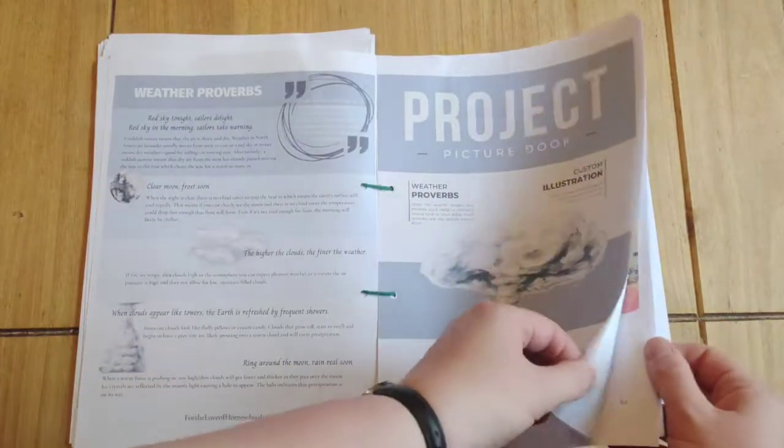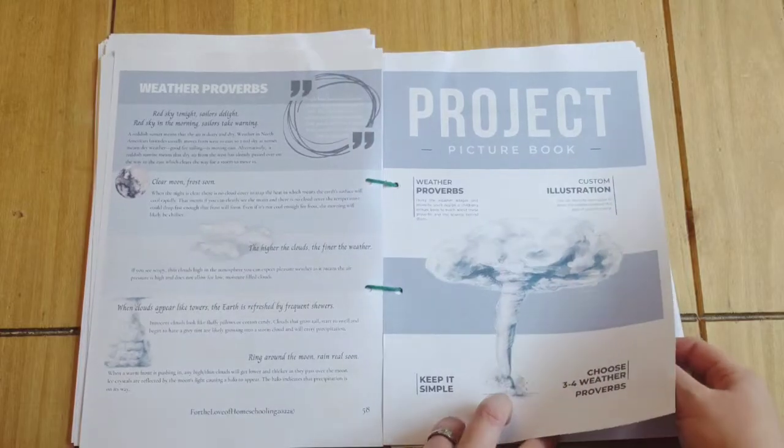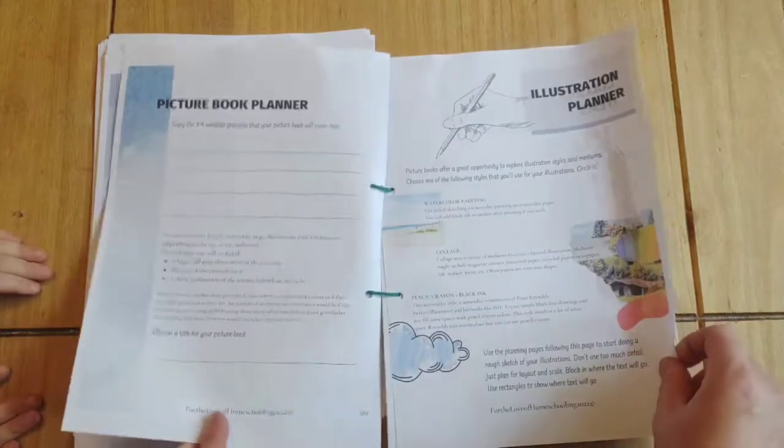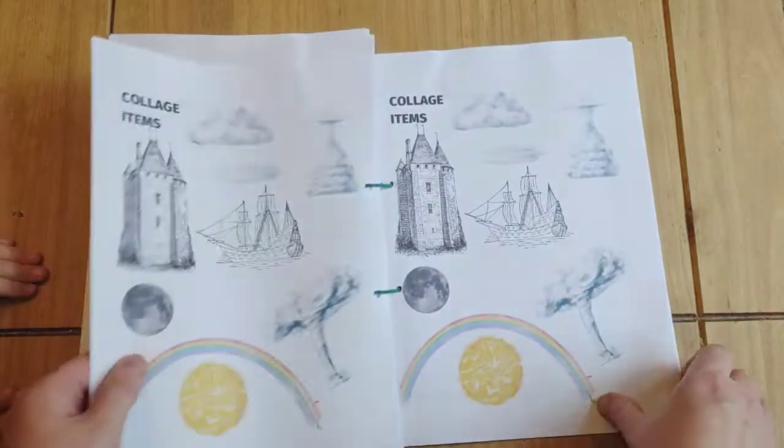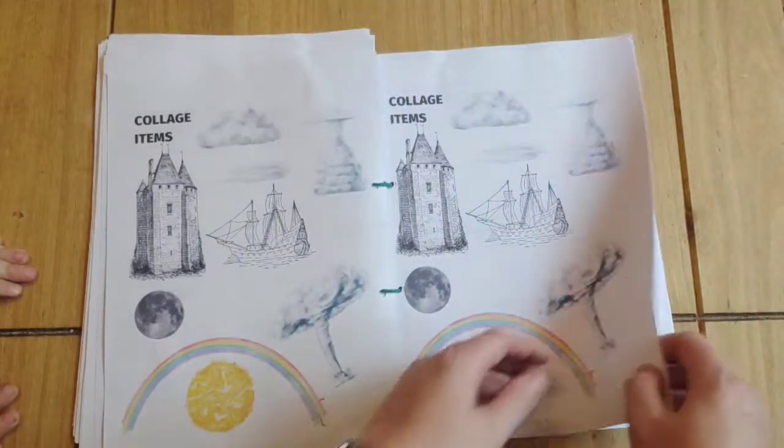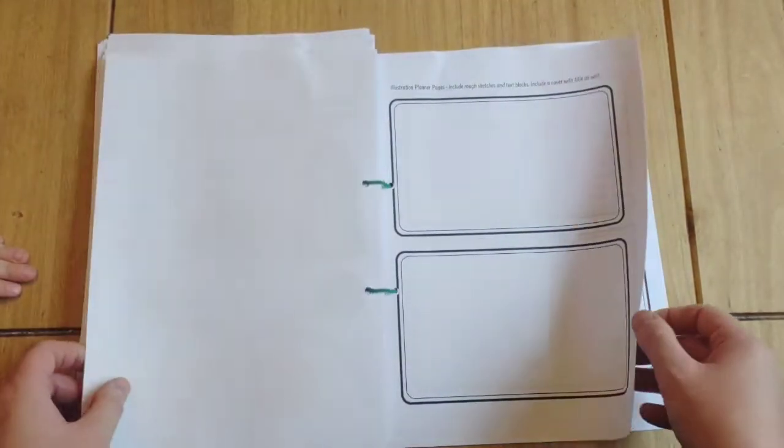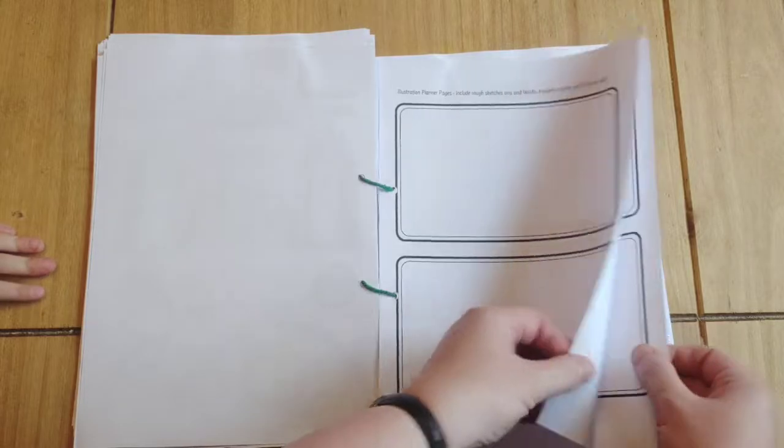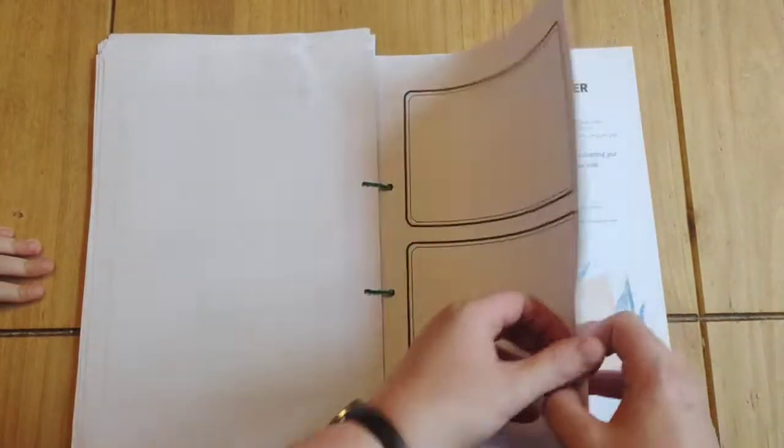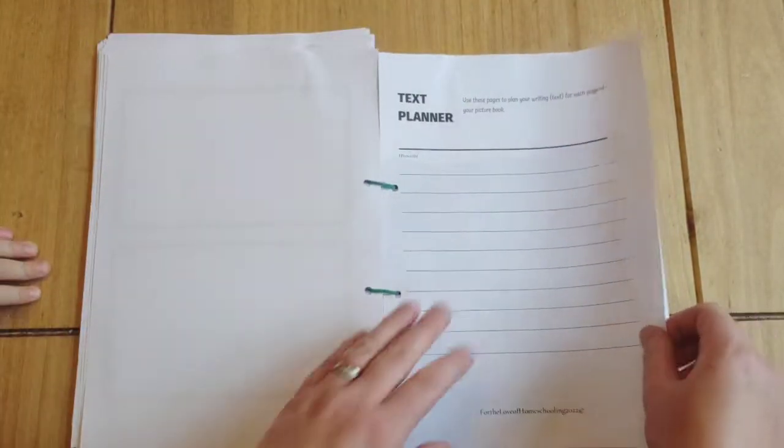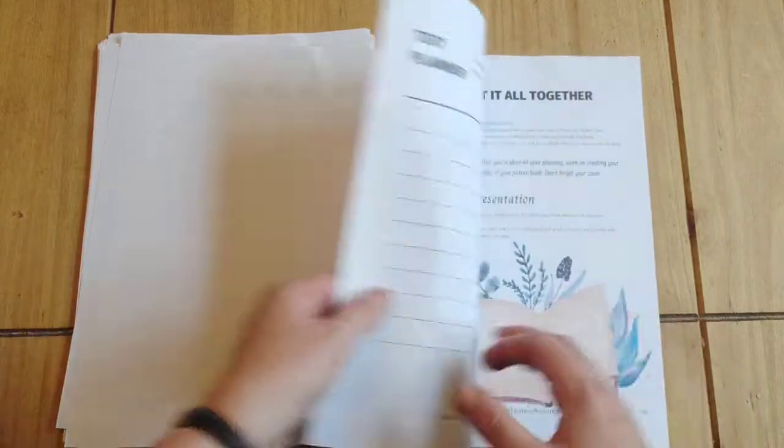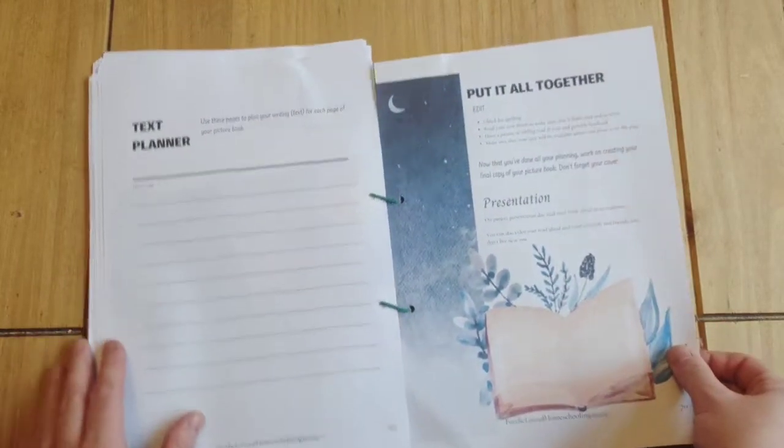The project for the oldest is a picture book. They've got to plan their illustrations, some collage items. We've got some planner pages and text planner before they go and put it all together and then present it.